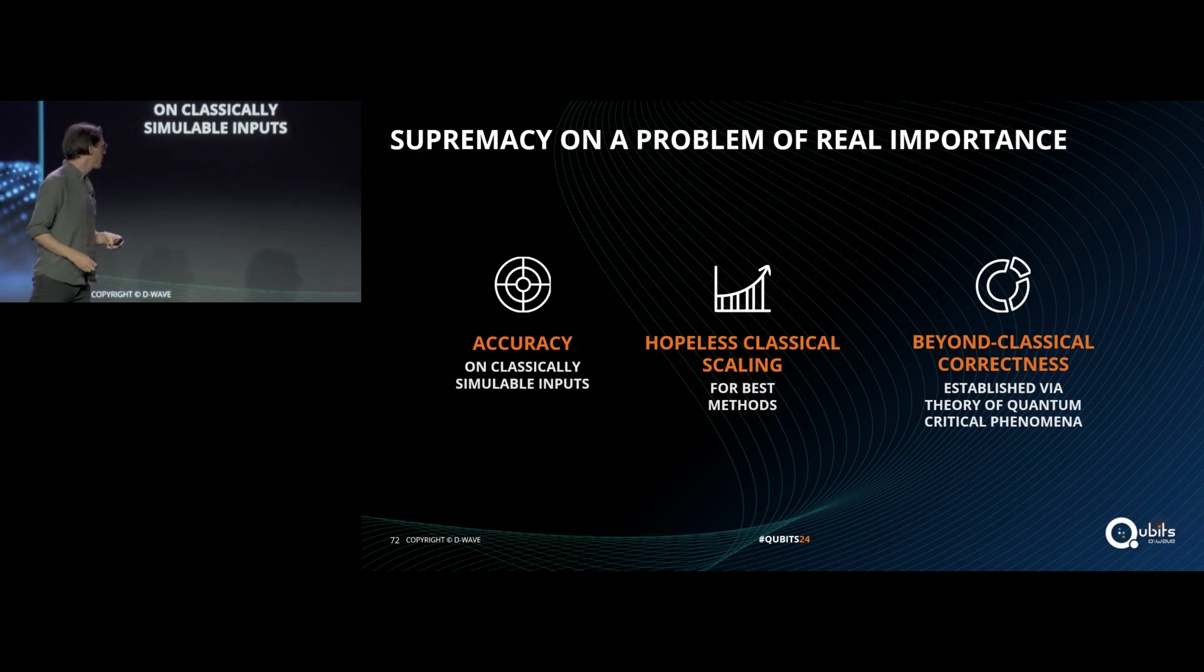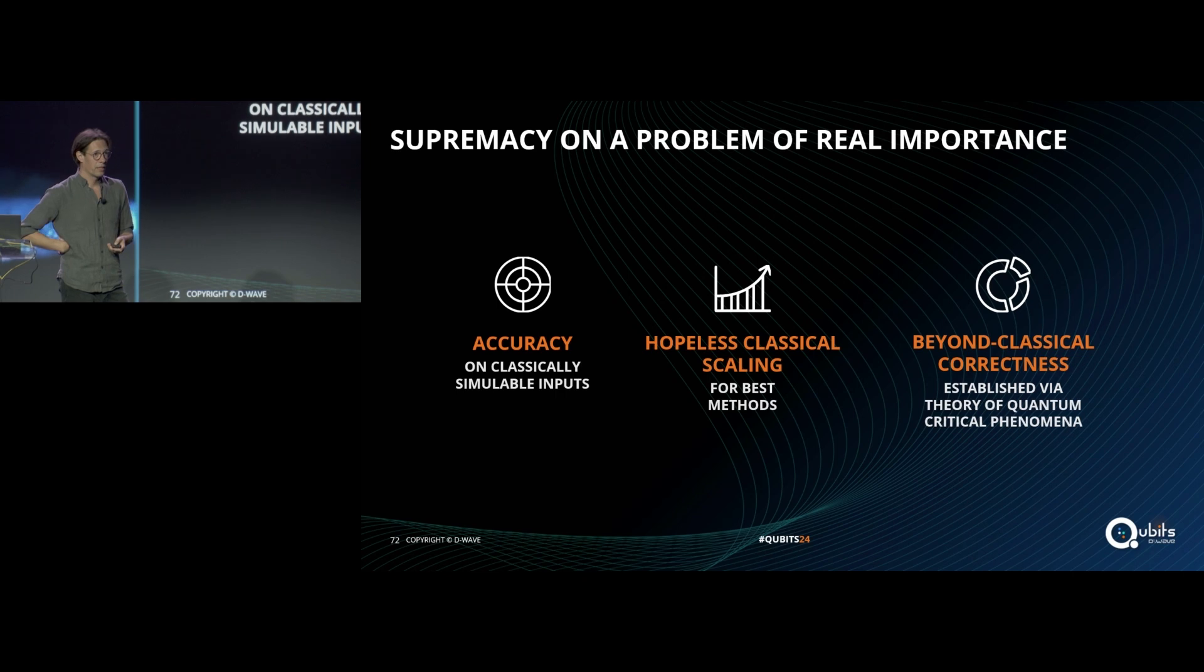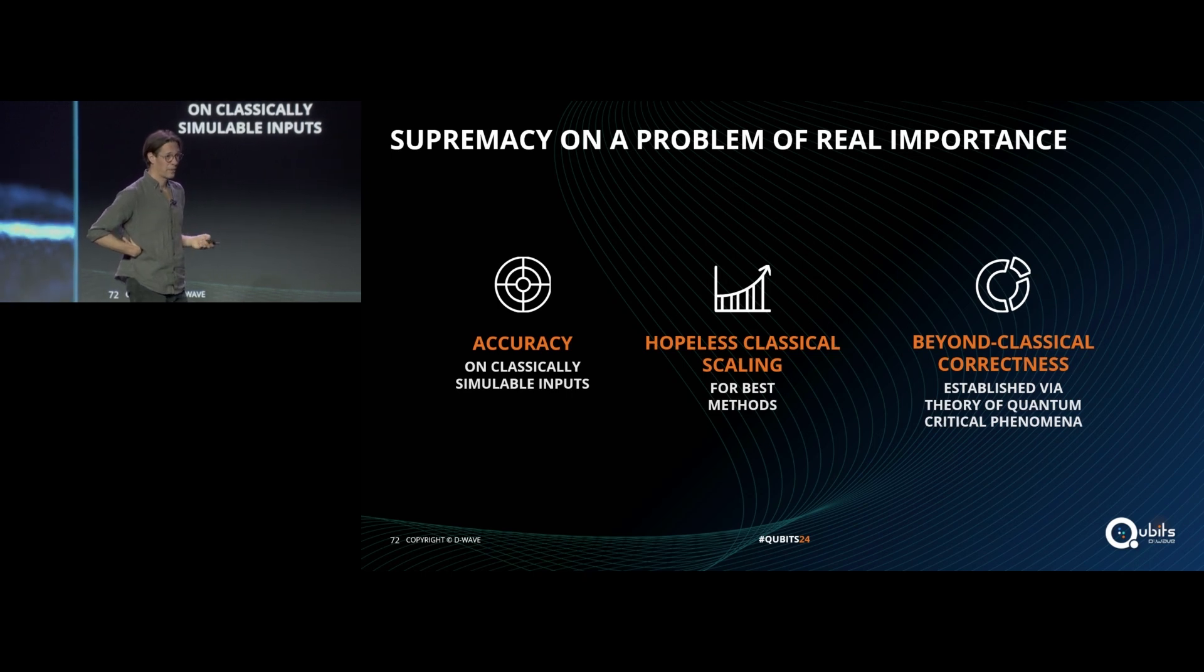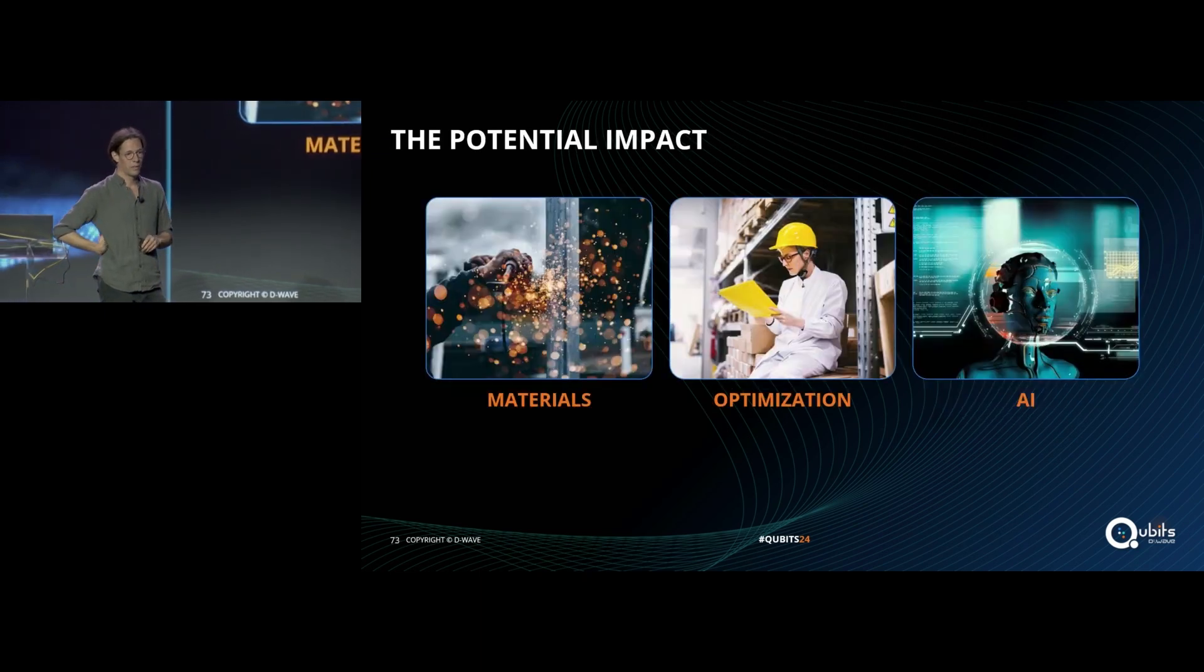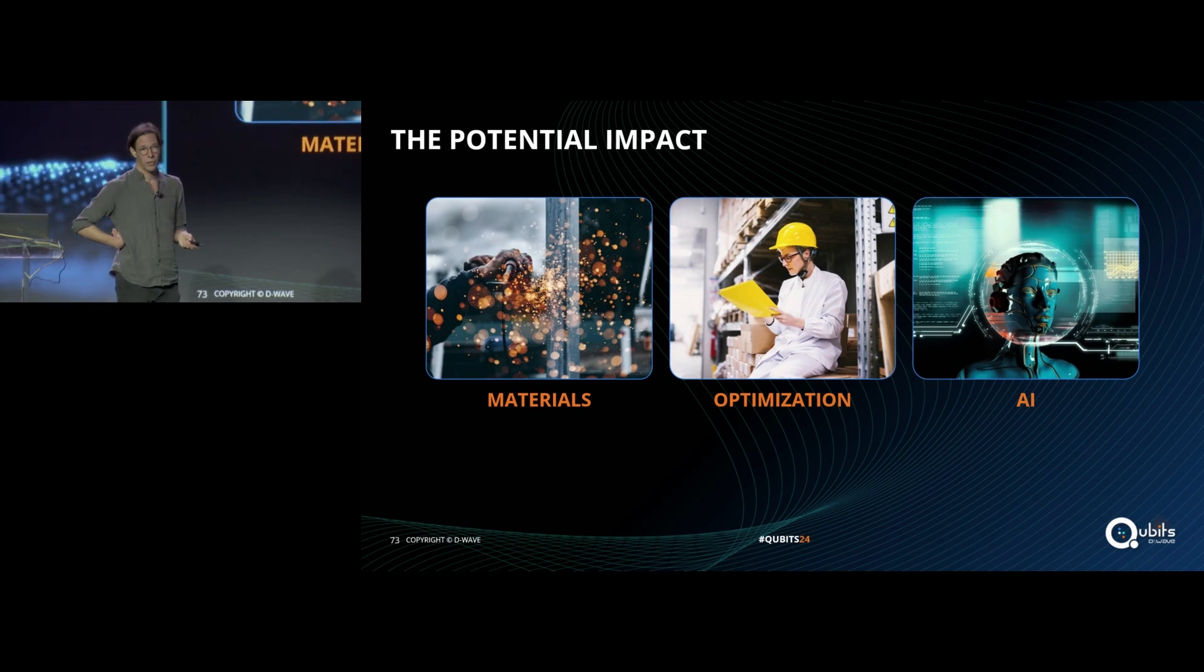Just to wrap up, we've shown supremacy on a problem of real importance. This is a quantum simulation of spin dynamics. We've got accuracy where we can check it. We've got hopeless classical scaling, which is backed up by theory. And we've got beyond classical correctness where we can confirm this indirectly with scaling laws. This is a problem of real importance with potential impacts on materials, optimization, and AI. You're going to hear a lot more about these applications throughout the day and tomorrow. I'm going to wrap up there and thank you for your time.